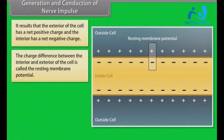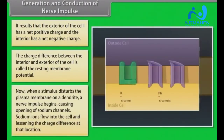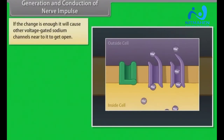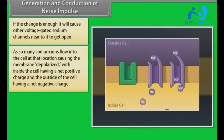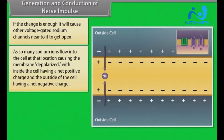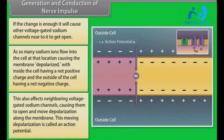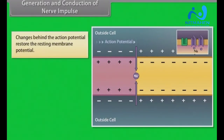The charge difference between the interior and exterior of the cell is called the resting membrane potential. When a stimulus disturbs the plasma membrane on a dendrite, a nerve impulse begins, causing sodium channels to open. Sodium ions flow into the cell and lessen the charge difference at that location. If the charge is sufficient, it causes neighboring voltage-gated sodium channels to open. As many sodium ions flow into the cell, the membrane becomes depolarized, with the inside having a net positive charge and the outside a net negative charge. This affects neighboring channels, moving depolarization along the membrane — this moving depolarization is called an action potential.